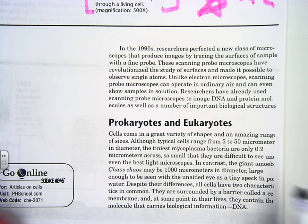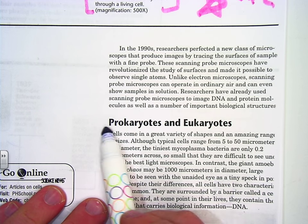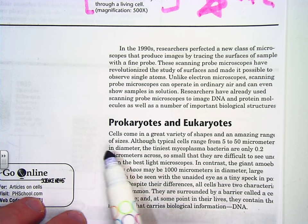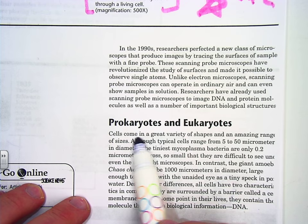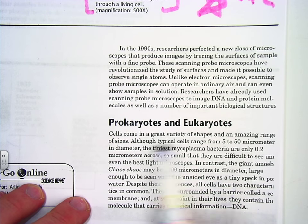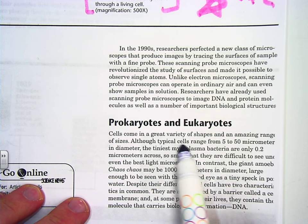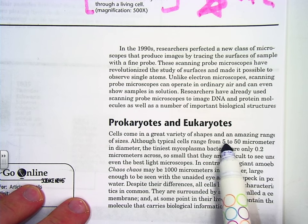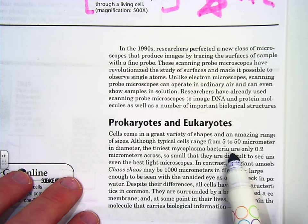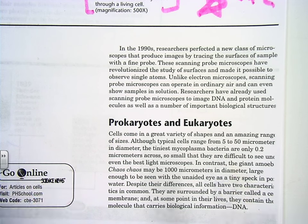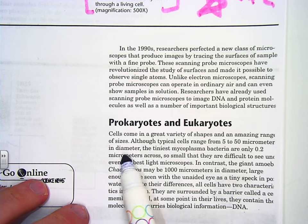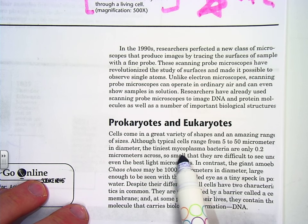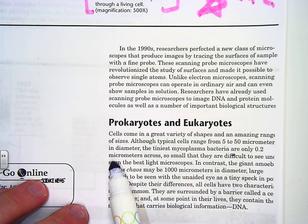Prokaryotes and eukaryotes — here's one of our objectives. It asks you to know the characteristics of prokaryotes and eukaryotes. Cells come in a great variety of shapes and an amazing range of sizes. Although a typical cell ranges from 5 to 50 micrometers — that is a millionth, so 5 to 50 millionths of a meter in diameter — the tiniest mycoplasma bacteria are only 0.2 micrometers across.